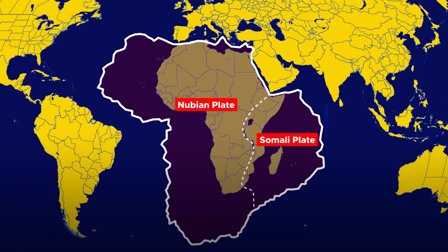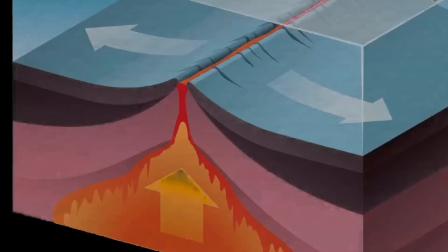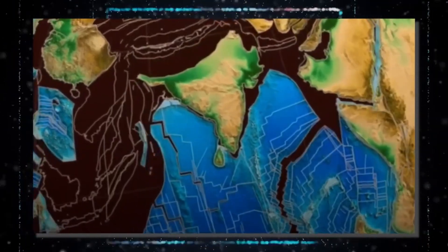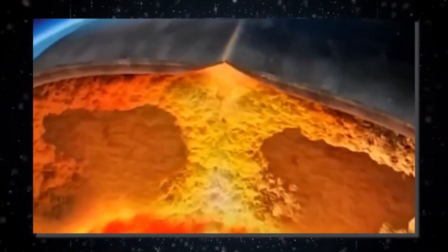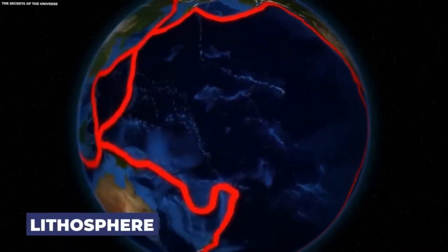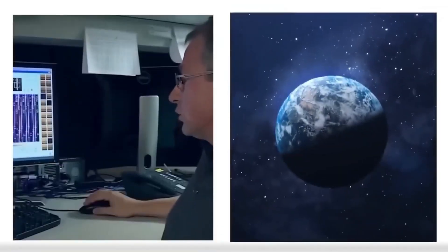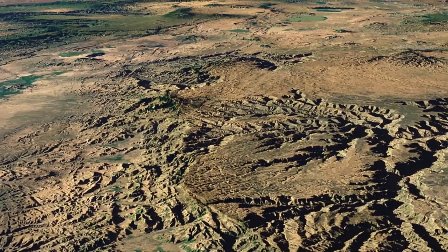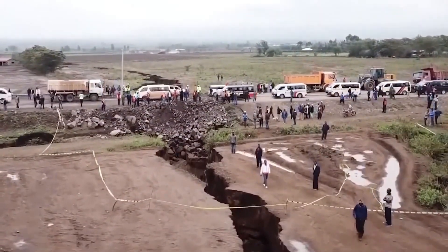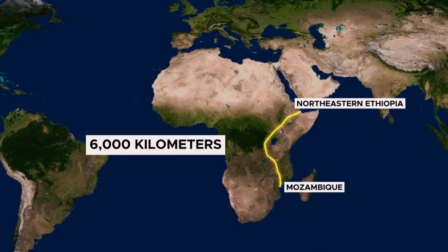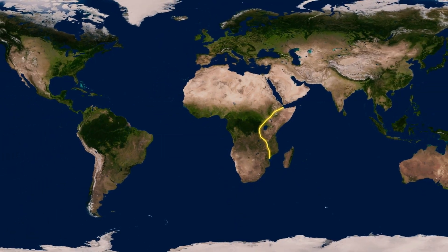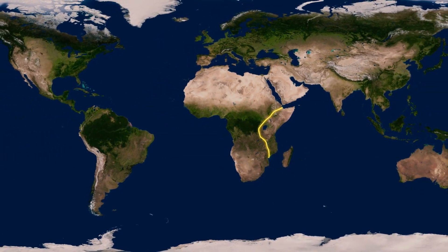The Eastern Rift runs through Ethiopia, Kenya, and northern Tanzania. It is distinguished by prominent volcanic features such as Mount Kilimanjaro and Mount Kenya, as well as alkaline lakes like Lake Turkana and Lake Natron. The Western Rift is bordered by some of Africa's largest and deepest lakes, including Lake Tanganyika, Lake Kivu, and Lake Albert. The Western Rift is less volcanically active, but is notable for its significant seismic activity.